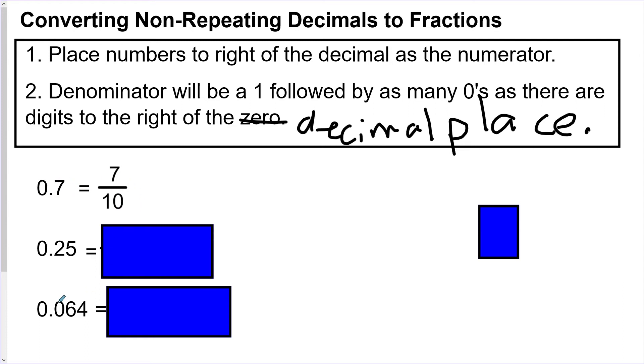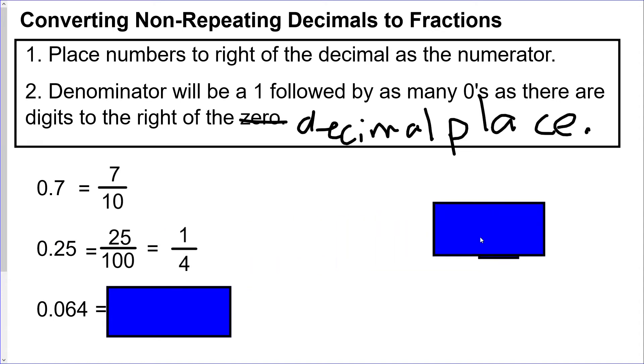Now 0.25, because we've got two digits there, so 25 will be the top and then the bottom will be 100 because we've got two digits to the right of that decimal. 25 over 100 which reduces to 1 over 4. I guess I didn't say it, but you should be reducing to lowest terms if you can.